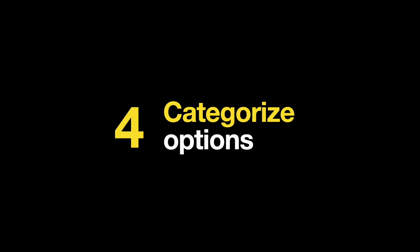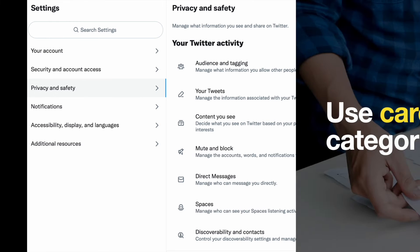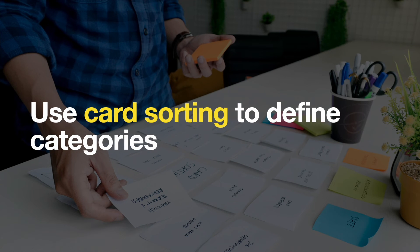Last but not least, categorize different options to make it easier for users to digest them. For example, you can see how Twitter groups different categories of settings. You always need to ensure that the categorization makes sense to your users.